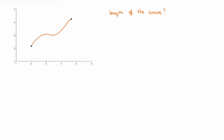Let me be a little more precise. I'll assume that the curve is the graph of a function f(x), with the initial point at (a, f(a)) and the endpoint at (b, f(b)). I want to calculate the length of the curve y = f(x) between a and b. The idea is always the same when you use integration to solve problems: you want to slice the problem into little slices, and then sum over slices.